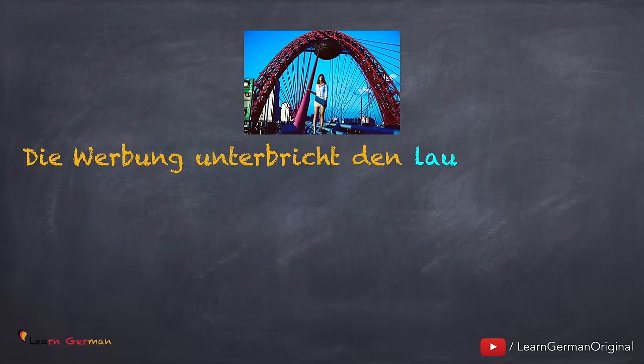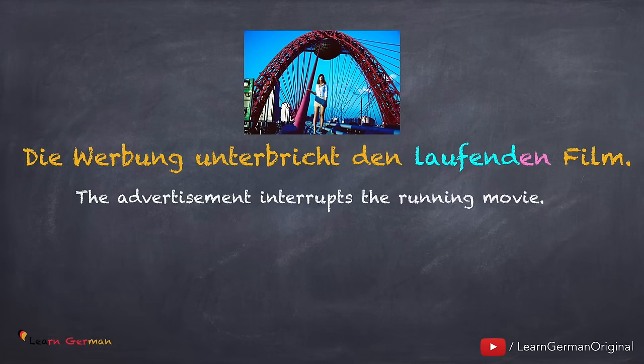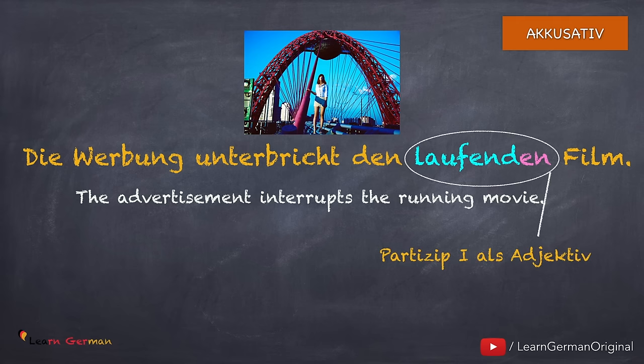Das heißt, kochend bekommt die Endung -e für Feminin im Nominativ. Hier ist das nächste Beispiel: Die Werbung unterbricht den laufenden Film. Laufenden ist Partizip 1 von dem Verb laufen. Warum hat laufend hier die Endung -en? Weil den laufenden Film in diesem Fall das Akkusativobjekt ist. Weil Partizip 1 hier als Adjektiv vor dem Nomen steht, bekommt es auch die Adjektivendung.